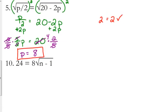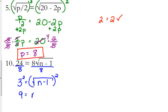Now we're going to look at number 10, where we have to isolate the radical. This one has a number in front of the square root — an 8. You cannot distribute that 8 into the square root; we need to move it to the other side by dividing both sides by 8. 24 divided by 8 is 3, so we get 3 equals the square root of n minus 1. Now it's isolated, so we square both sides to get 9 equals n minus 1, then add 1 to both sides: n equals 10. Checking: 10 minus 1 is 9, square root of 9 is 3, 8 times 3 is 24. So n equals 10 is the solution.